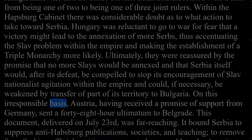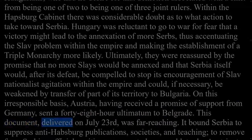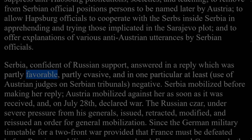On this irresponsible basis, Austria, having received a promise of support from Germany, sent a 48-hour ultimatum to Belgrade, delivered on July 23. It bound Serbia to suppress anti-Habsburg publications, societies, and teaching; to remove from Serbian official positions persons to be named by Austria; to allow Habsburg officials to cooperate with the Serbs inside Serbia in apprehending and trying those implicated in the Sarajevo plot; and to offer explanations of various anti-Austrian utterances by Serbian officials. Serbia, confident of Russian support, answered in a reply which was partly favourable, partly evasive, and negative on the particular point of Austrian judges on Serbian tribunals. Serbia mobilised before making her reply, Austria mobilised against her as soon as it was received, and on July 28 declared war.